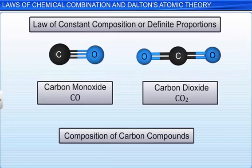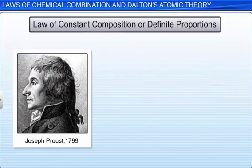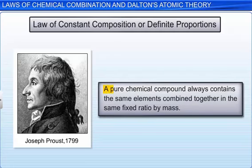Now, let's look at the next law: the Law of Definite Proportions. As the name suggests, this law deals with the composition of various elements present in a compound. In 1799, Joseph Proust proposed the law of definite proportions. This law states that a pure chemical compound always contains the same elements combined together in the same fixed ratio by mass.